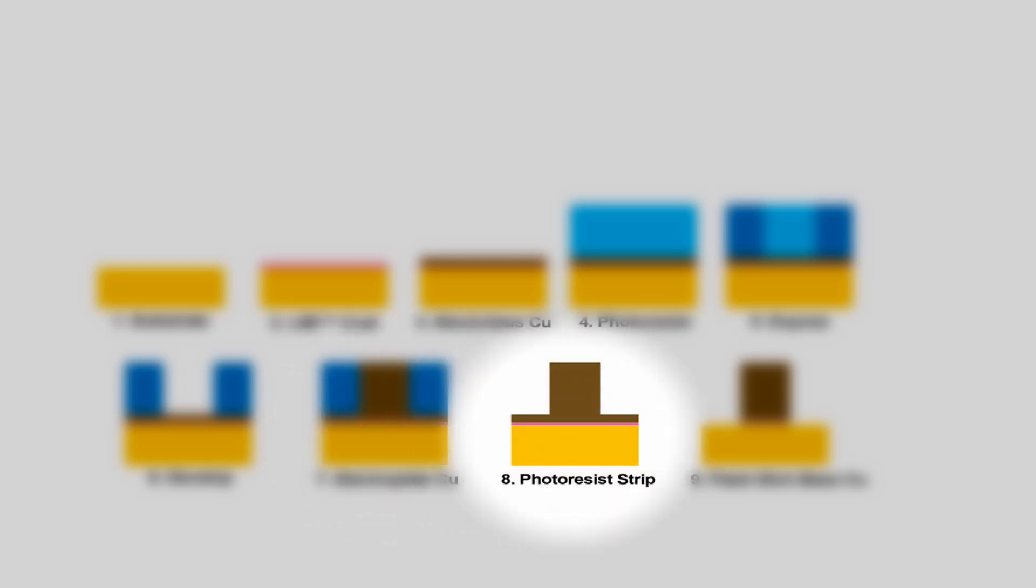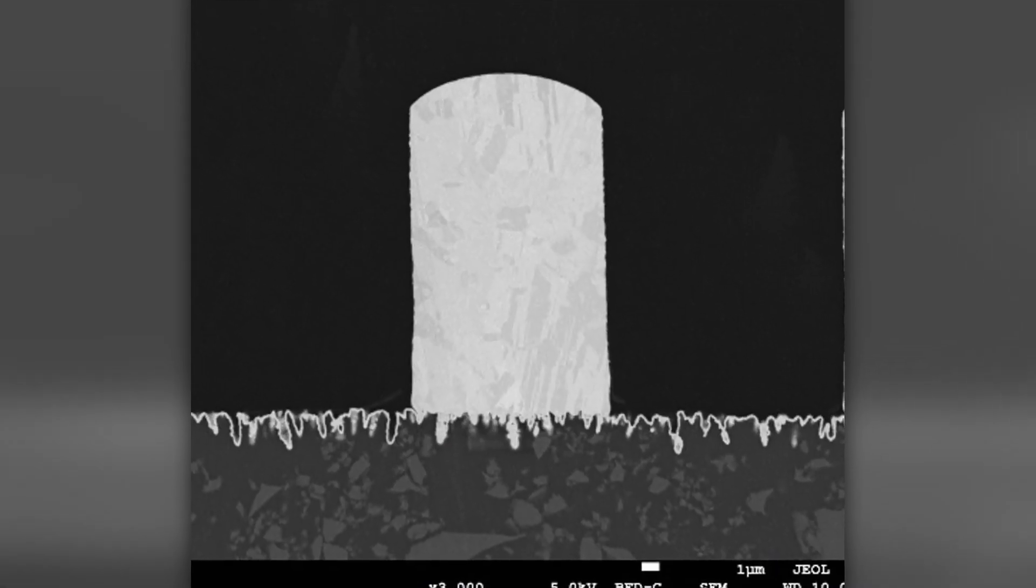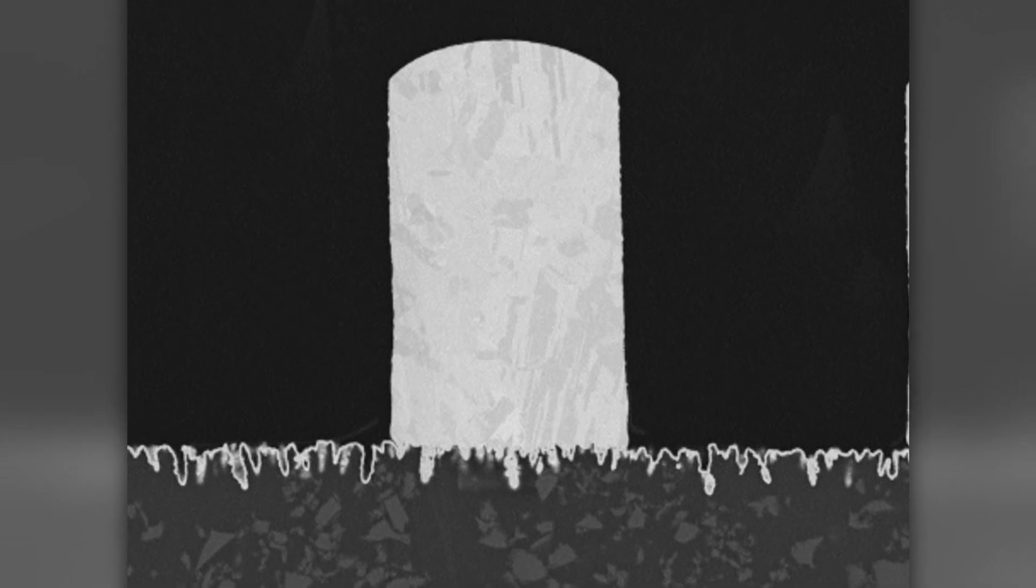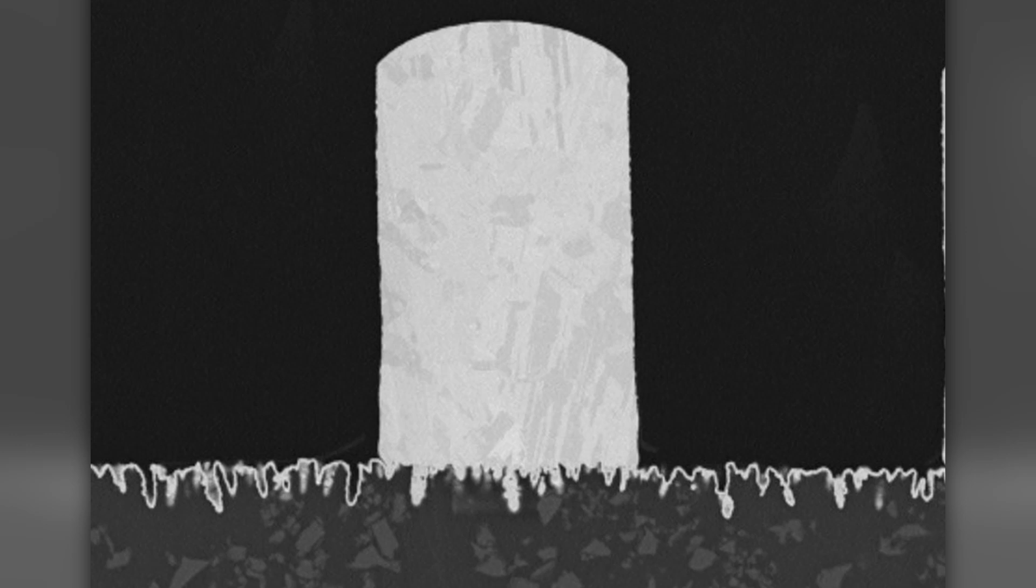Once those traces are formed, we're going to strip away the remaining photoresist and it will leave a circuit pattern that looks something like this. You can see your circuit traces with the nice vertical side walls, and you can see that very thin layer of electrolysis copper still on the surface.